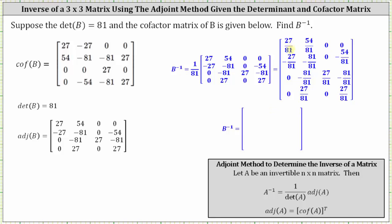In the first row, 27 over 81 simplifies to 1/3, and 54 over 81 simplifies to 2/3, then 0, 0. In the second row, we have negative 1/3, negative 1, 0, negative 2/3. In the third row, we have 0, negative 1, 1/3, negative 1. In the fourth row, we have 0, 1/3, 0, 1/3.